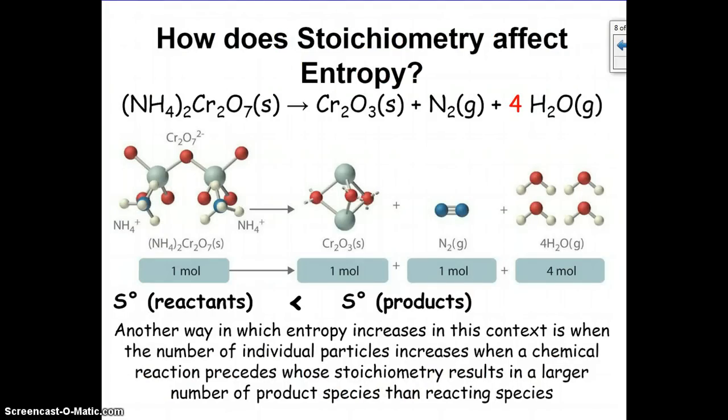How does stoichiometry affect entropy? First let's look at this reaction. If you balanced it, you see you had one mole of reactant, and then over here it breaks into three separate things, and you get one, one, and then four. So a total of six moles of product. This is a big increase in entropy. Because you're going from one molecule to six molecules, which is more chaotic. There's more ways for those six to be randomly dispersed than the one. So stoichiometry is a big factor in increases in entropy.